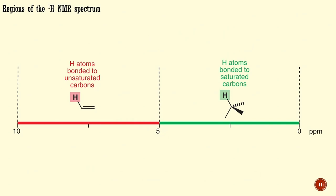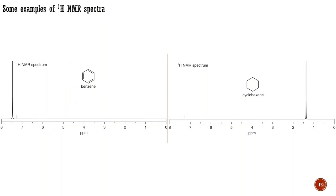We can also divide up the proton NMR spectrum into regions that parallel the regions of the carbon NMR spectrum. Hydrogen atoms bonded to saturated carbon atoms appear in the more shielded right-hand region, while those bonded to unsaturated carbon atoms — alkenes, aromatics, or carbonyl groups — appear in the left-hand, less shielded region between 10 and 5 ppm. The first two spectra each contain only one peak because every proton in benzene and in cyclohexane is identical. In benzene, the peak is at 7.5 ppm, where we expect a proton attached to an unsaturated carbon atom. While in cyclohexane, it is at 1.35 ppm because all the cyclohexane protons are attached to saturated carbon atoms.